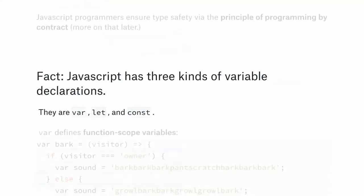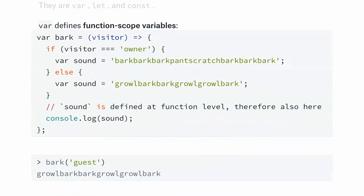JavaScript has three kinds of variable declarations since ES6 and ES7: var, let, and const. For a long time, JavaScript only had var, which defines function-scoped variables. If you come from C or Java where variables are block-scoped, please keep in mind that in JavaScript, var variables live in the function scope. So if I define 'sound' inside an if-else block with var, anything from that line onwards in that function will have access to 'sound.'